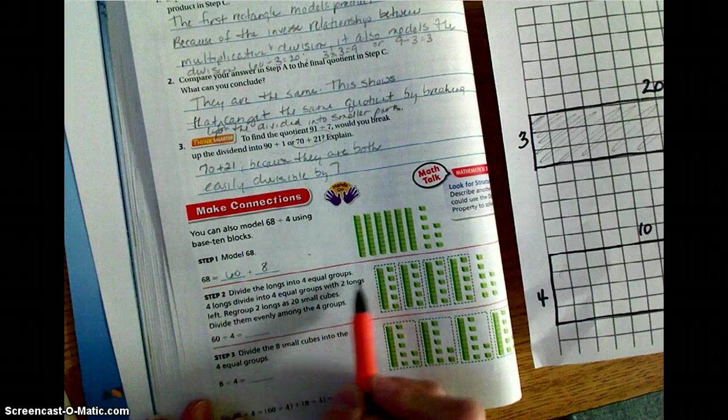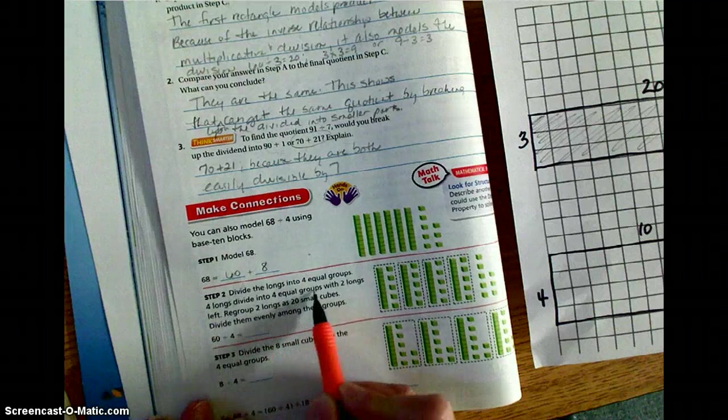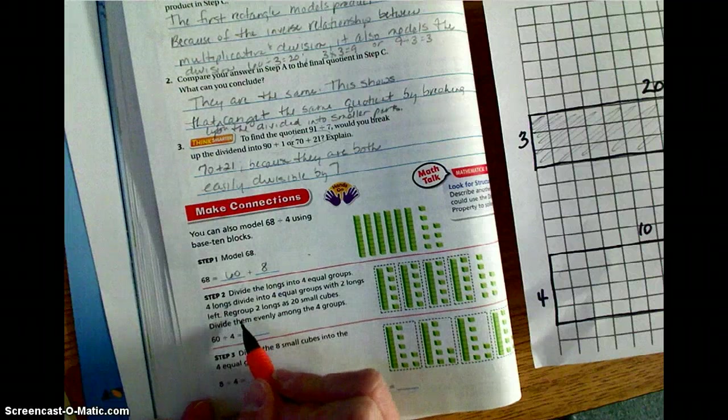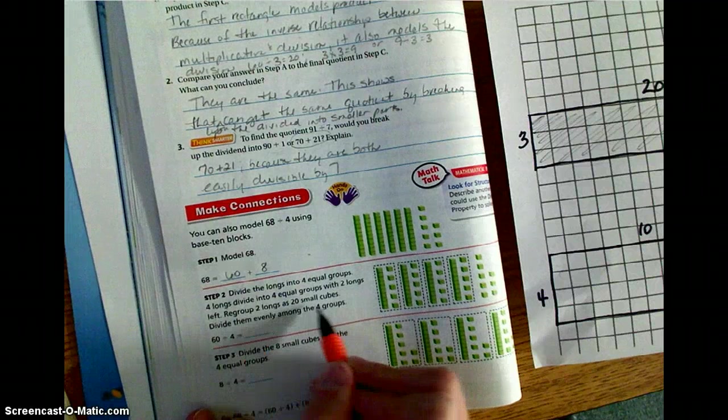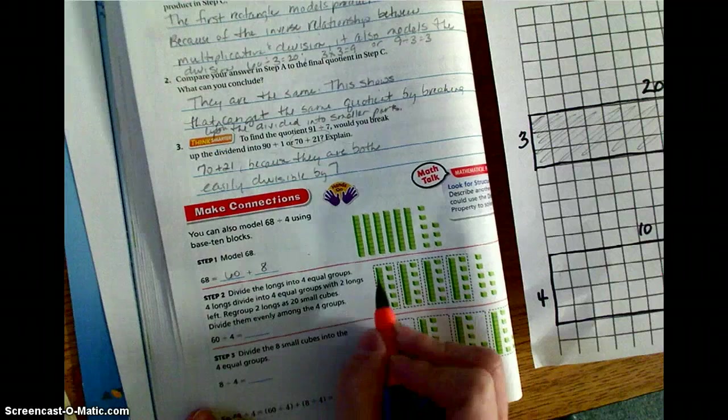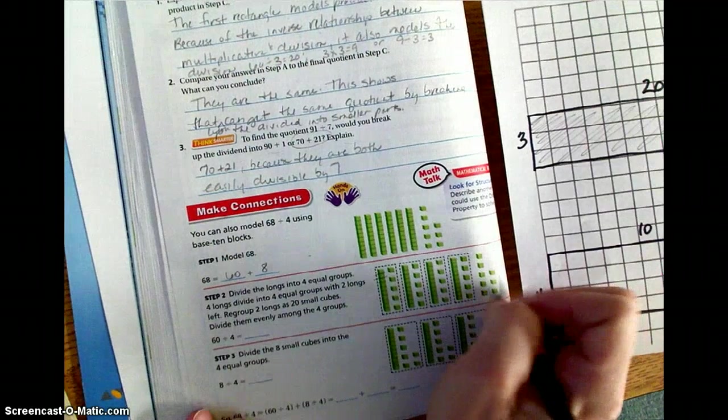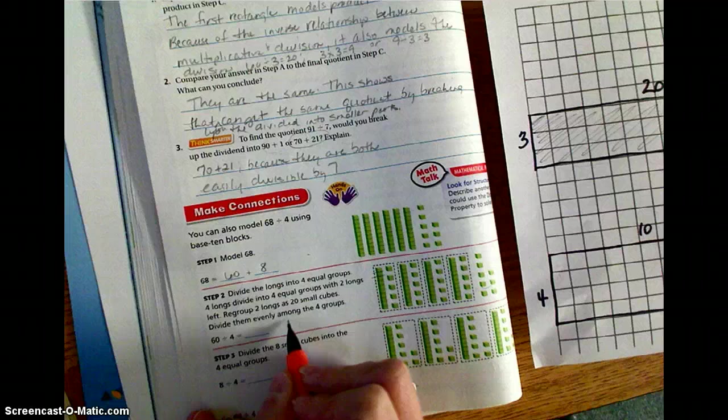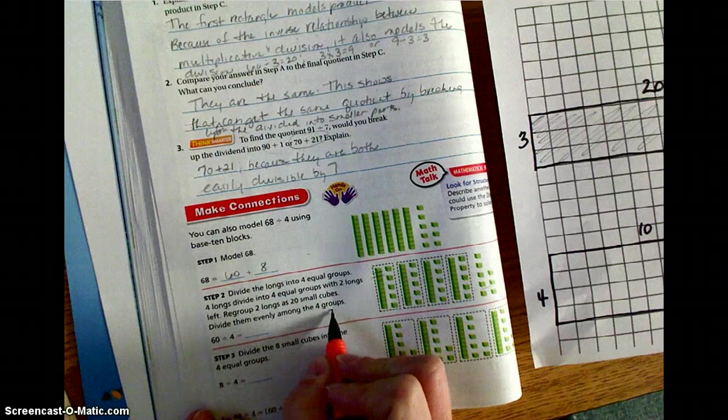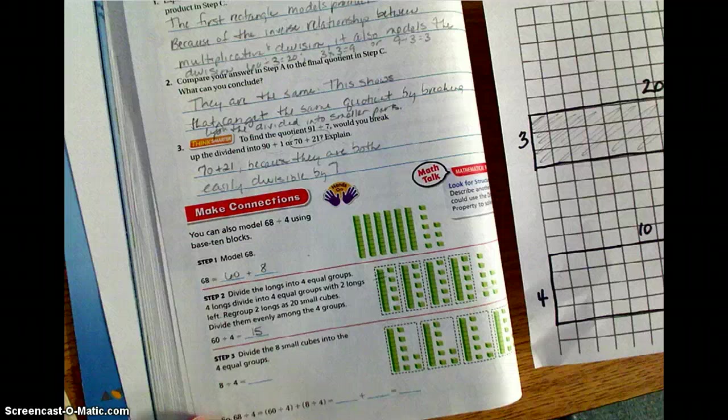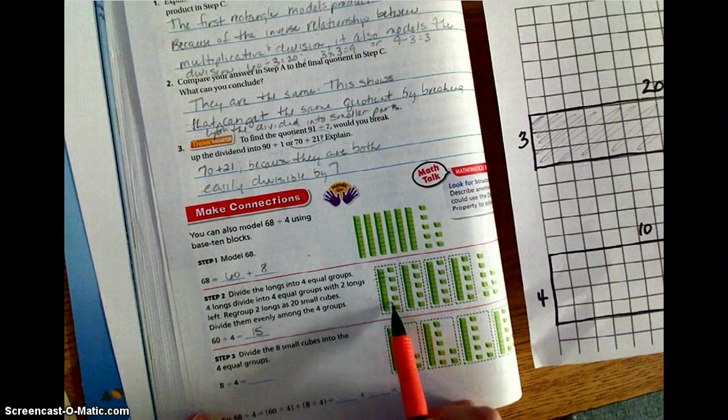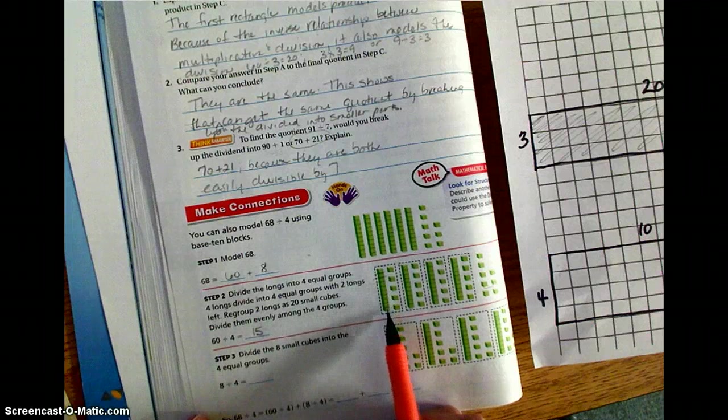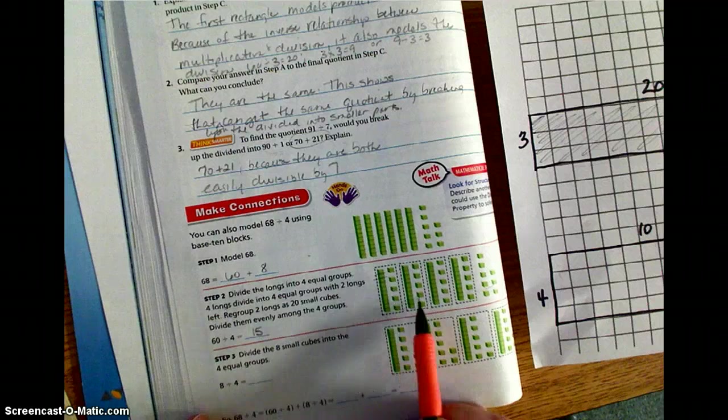Into 4 equal groups. 4 longs divided into 4 equal groups, with 2 longs left. So we have 2 longs left over. We're going to need to regroup those 2 longs as 20 small cubes. So basically, we're going to break one of these columns apart. That's what we did down here. So they're no longer connected as a 10. They now become singles. And we're going to divide them evenly among the 4 groups. So 60 divided by 4 is 15. And we could count in each group. How much does each group have? We have 1, 2, 3, 4, 5, 6, 7, 8, 9, 10, 11, 12, 13, 14, 15. There's 15 in each group.